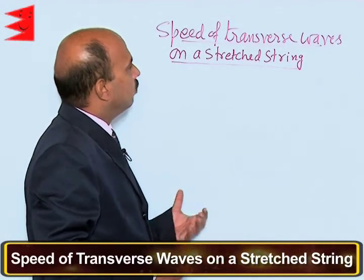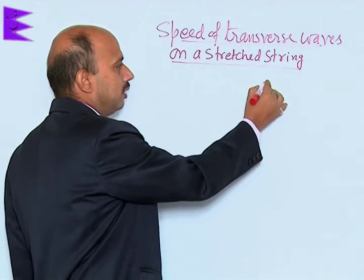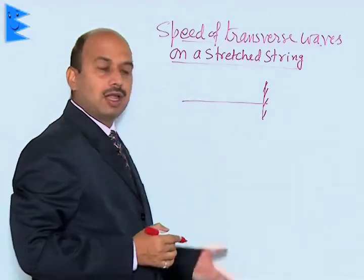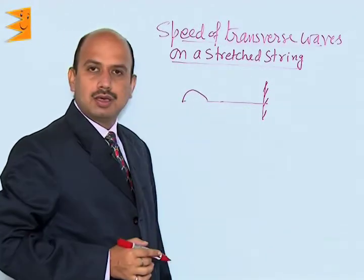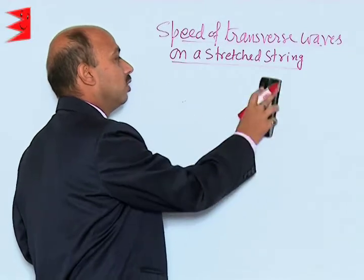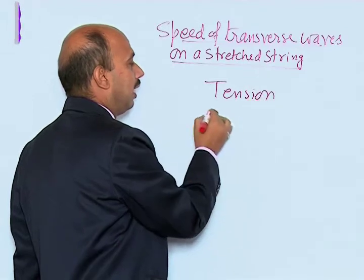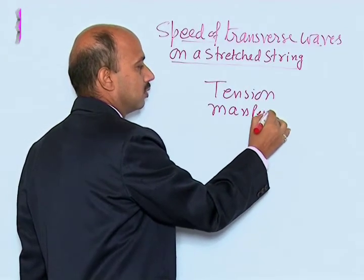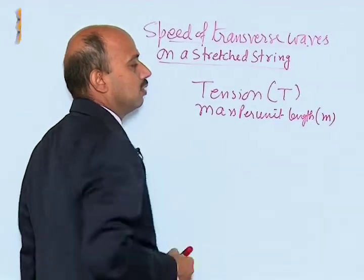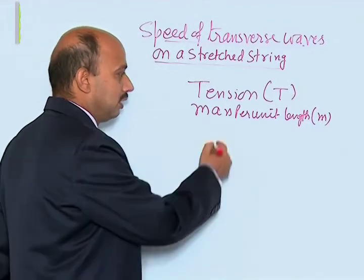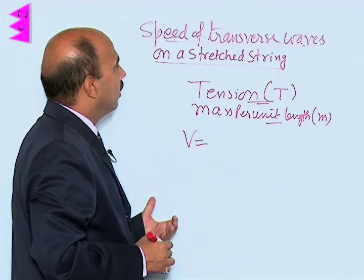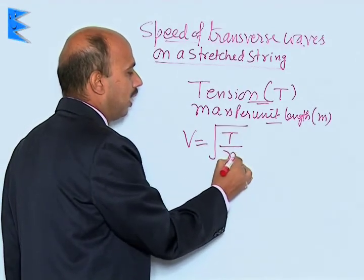Now, the speed of transverse waves on a stretched string: suppose one end of the string is fixed and the other end is free, and the wave is produced by moving it up and down — the wave travels in this way. The speed of the transverse wave on a stretched string depends on two factors: the tension in the string and the mass per unit length. Tension is represented by T and mass per unit length by m. Using dimensional analysis, the speed of a transverse wave on a stretched string is v = √(T/m).